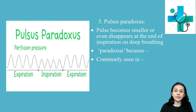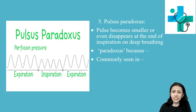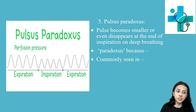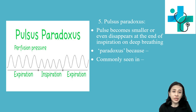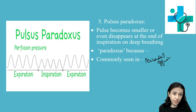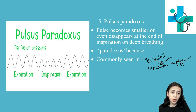Next is pulsus paradoxus. Here the pulse becomes small and may even disappear at the end of inspiration or deep breathing. During expiration the volume increases, and during inspiration it becomes small or may disappear. It is called paradox because heart sounds may be present but the pulse is absent. This is commonly seen in large pericardial effusion, also known as cardiac tamponade, constrictive pericarditis, emphysema, and massive pleural effusion.